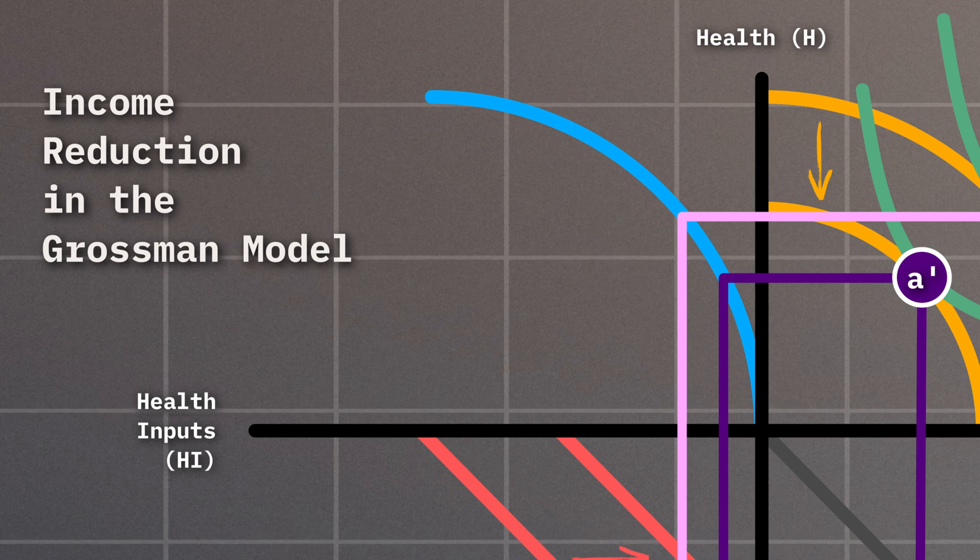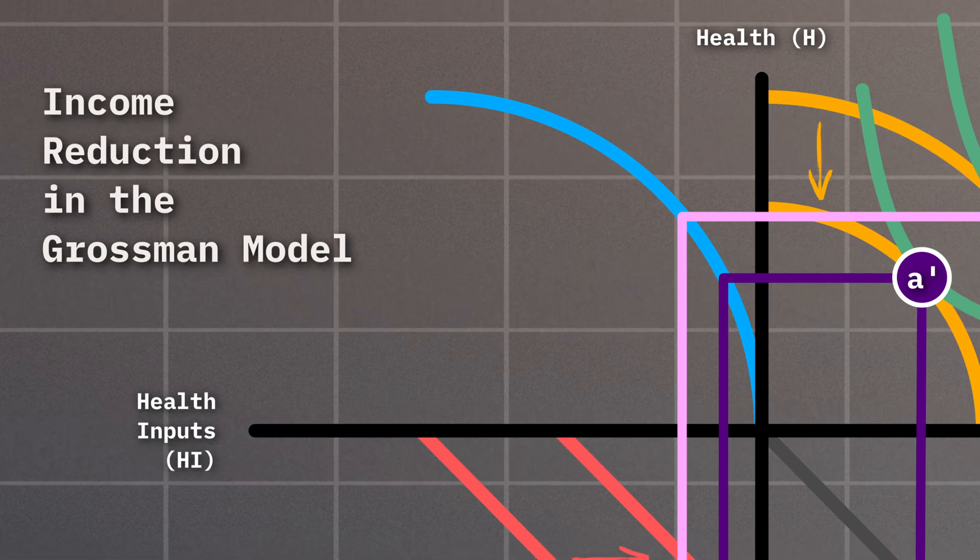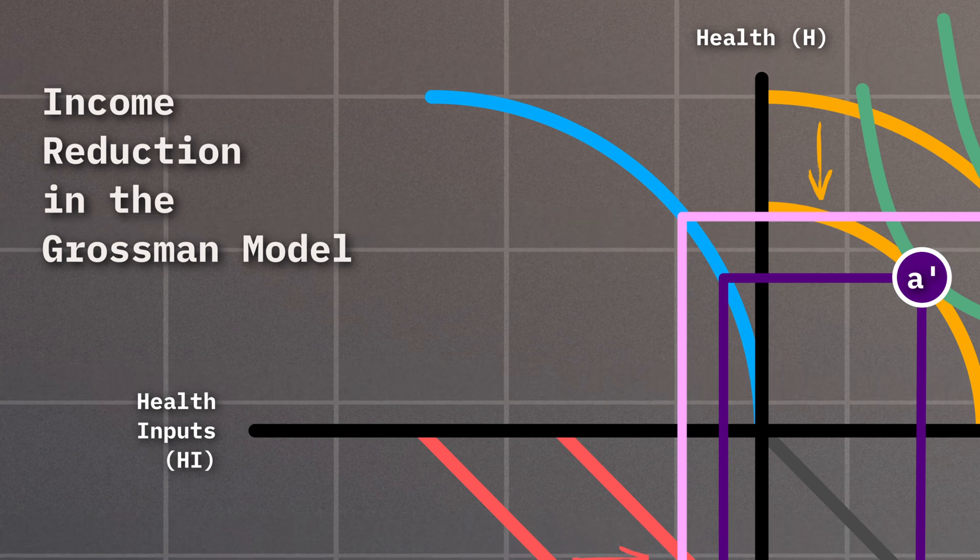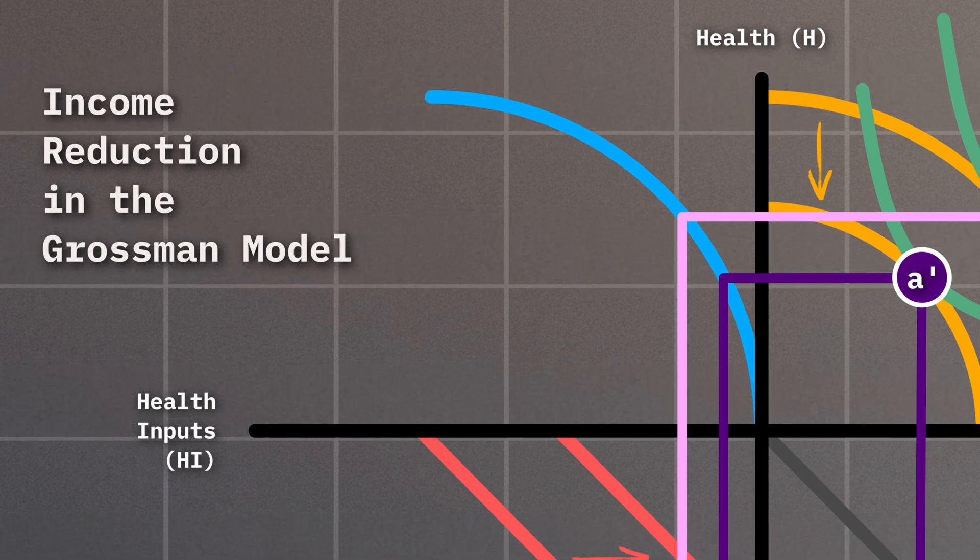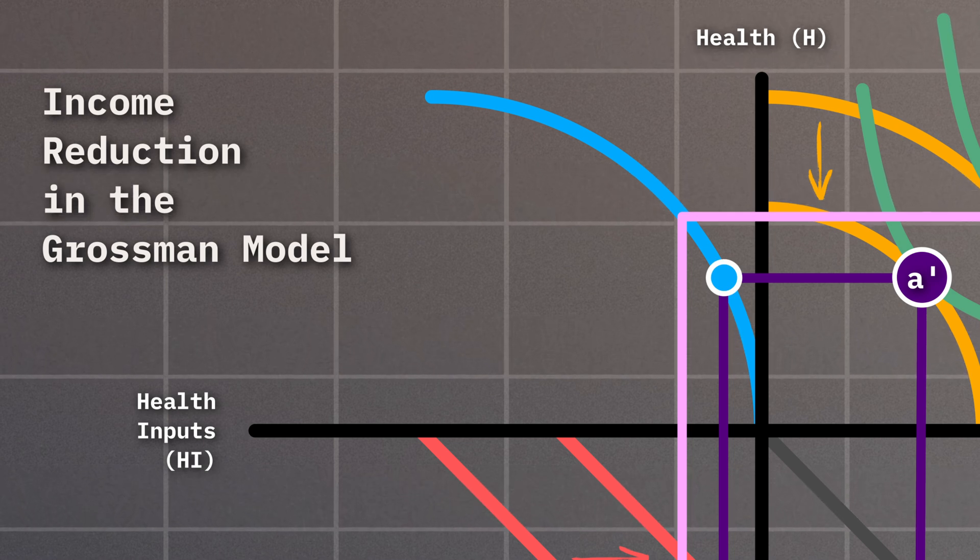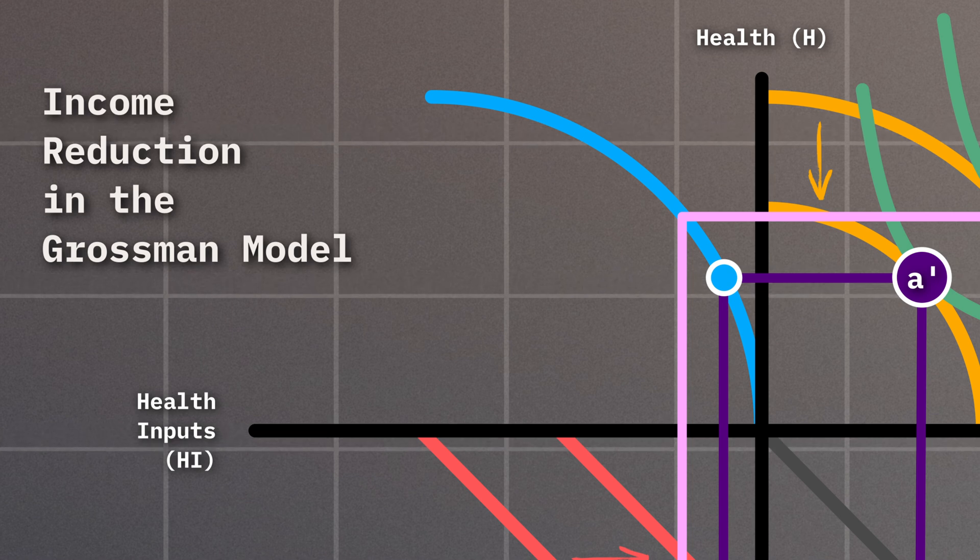Moving into quadrant two, the production function remains the same. After all, the relationship of producing health by buying health inputs hasn't changed. However, due to our lower income and consequently lower health, you hit a lower point on the production function compared to before. This means you're now buying fewer health inputs, but you also have a lower level of health.